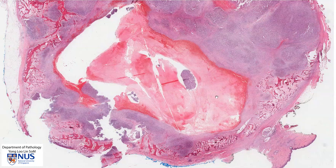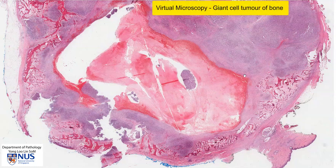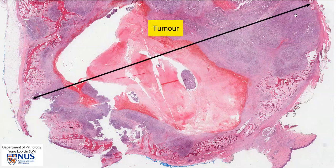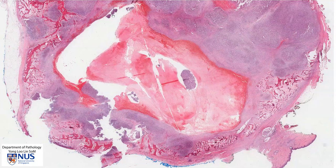Hello, this is a virtual microscopy slide showing an example of a giant cell tumor of the bone. We can actually see the outline of the bone with the periosteum, the cortical bone, and a little bit of the cancellous bone here. It is otherwise largely replaced by tumor. You can see a little bit of the periosteum on this other end, and this tumor has a very large area of cystic change with hemorrhage, which is very common in giant cell tumors of the bone.